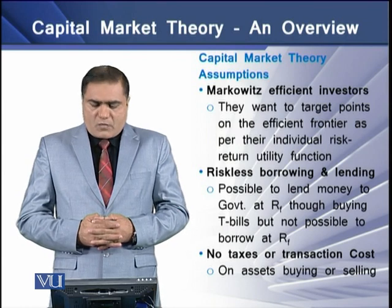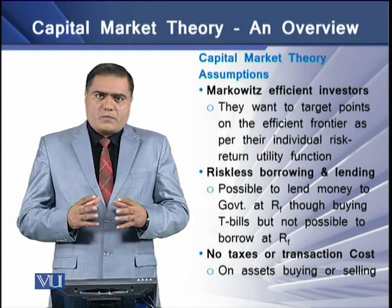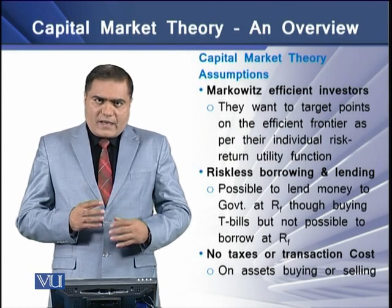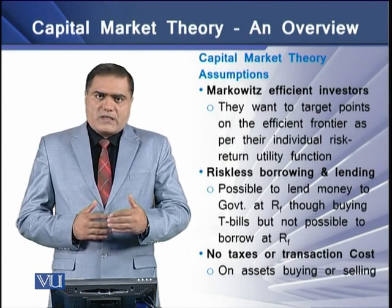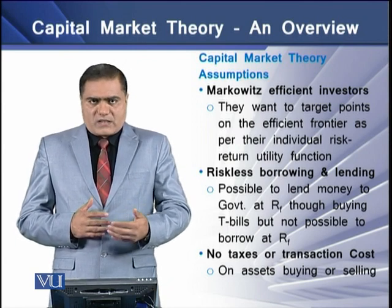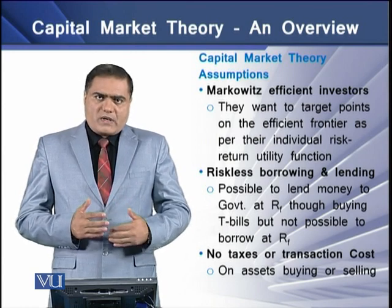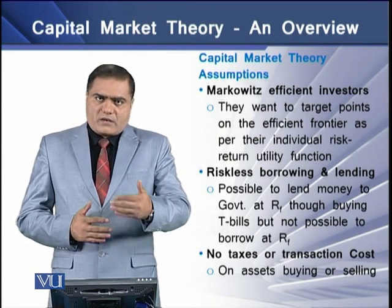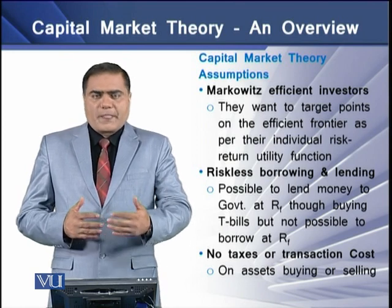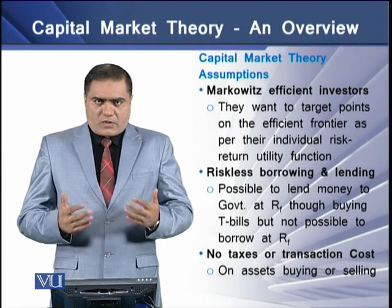The second assumption is risk-less borrowing and lending. The theory assumes that borrowing and lending of funds is possible at the risk-free rate. In the real world, lending may be possible at the risk-free rate through investment in government treasury bills, but borrowing at the risk-free rate is not possible.